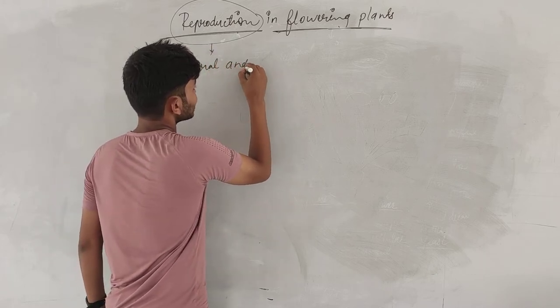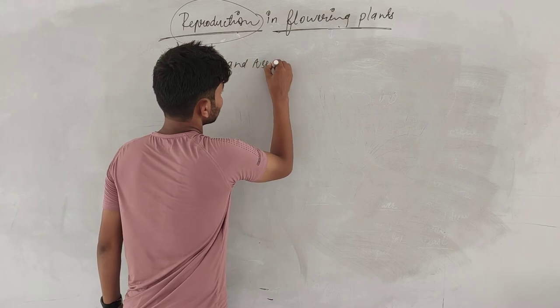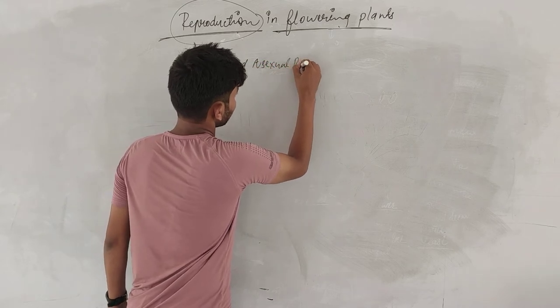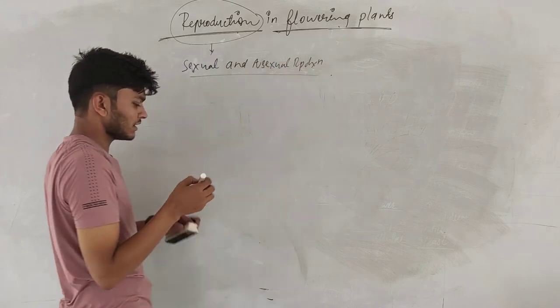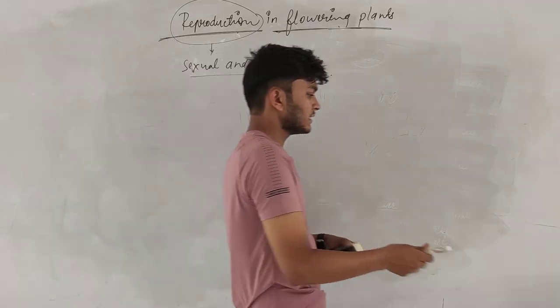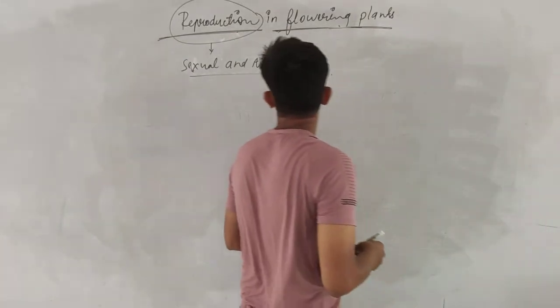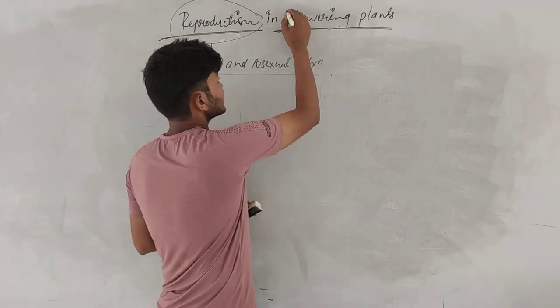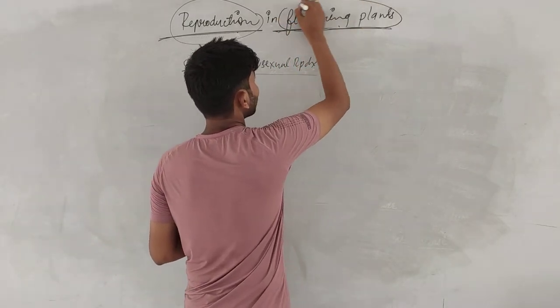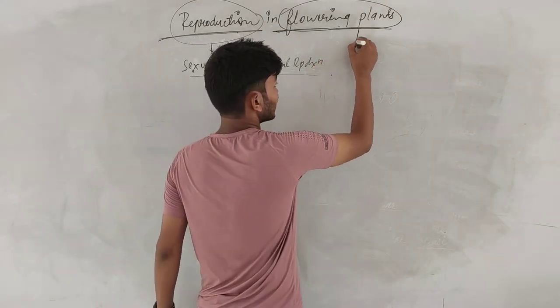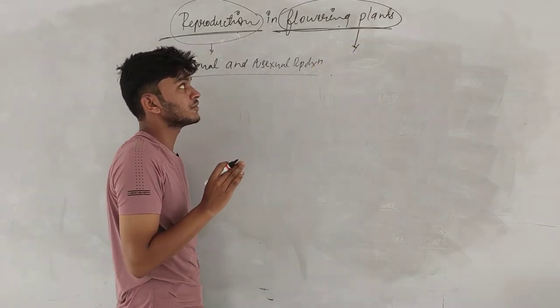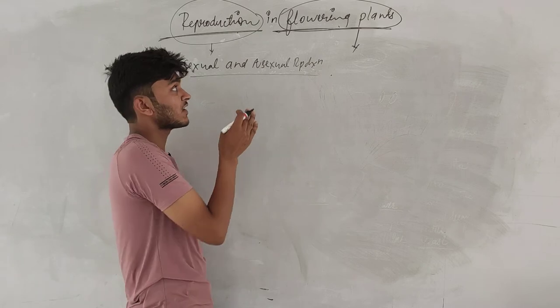In this we have also talked about sexual and asexual reproduction. Sexual and asexual reproduction. We have talked about this in the previous chapter. Now let's talk about flowering plants.